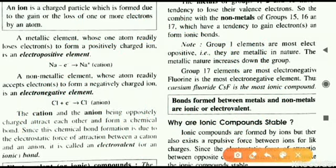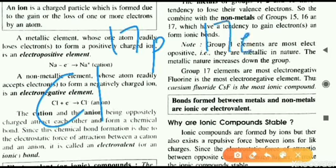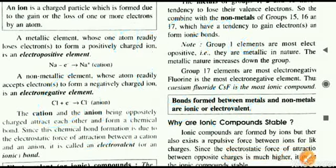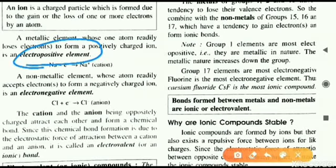Similarly, chlorine has atomic number 17, so it has 17 protons. When it gains one electron, it has 18 electrons. Comparing 17 protons to 18 electrons: the electron count exceeds the proton count by one, giving a net charge of minus one. That is why the chloride ion has a minus one charge — it is called an anion.